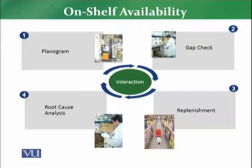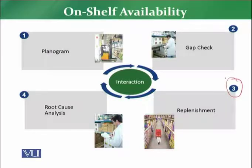There are four main components, and the interaction of these four will help in improving on-shelf availability. The first part is planogram, the second part is gap check, the third part is related to replenishment, and the fourth part is related to root cause analysis. We are now going to discuss the interaction between all these four components and how they help in on-shelf availability of a particular product.